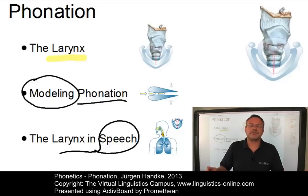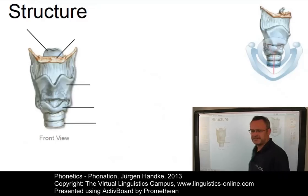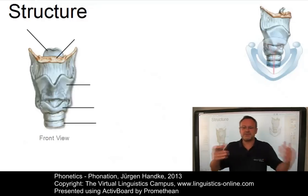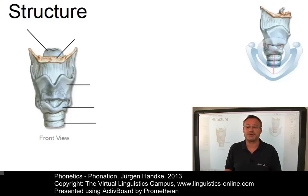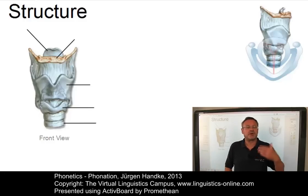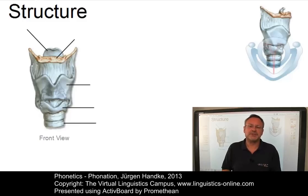Let us look at the structure of the larynx first. The larynx consists of a number of cartilages, which are interconnected by complex joints, and move about these joints by means of muscular and ligamental force. Let us study the anatomical details from various angles.